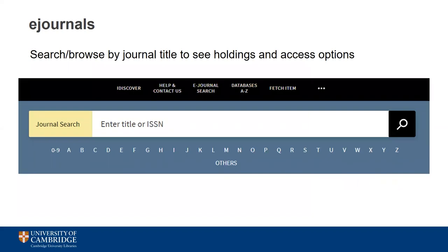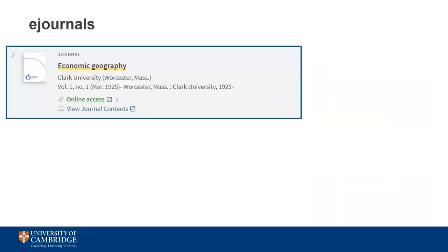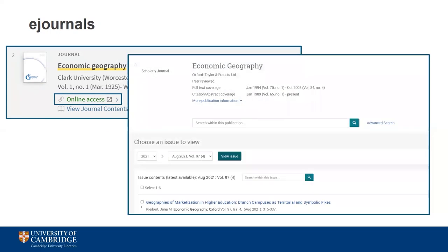One of the best ways to look for specific journal titles is by using the dedicated eJournal search option, which you'll find in the bar at the top of any iDiscover page. This brings up the option to enter a journal title or serial number, or to browse journal titles by the first letter of their name. Since it's a search specifically for eJournals, this automatically filters out any content which might clutter your search. When you do a search, you'll get a result listing the title and other basic information — look for the green 'online access' option and follow the link, which takes you to the home page of the journal itself.